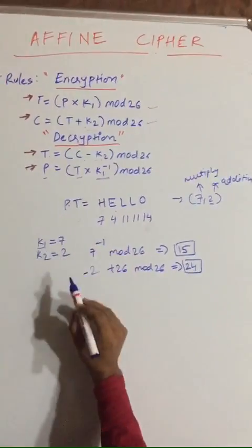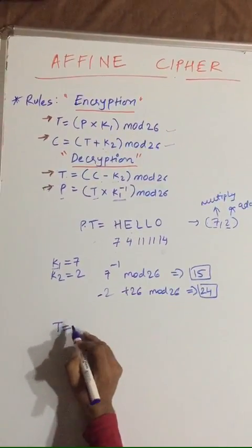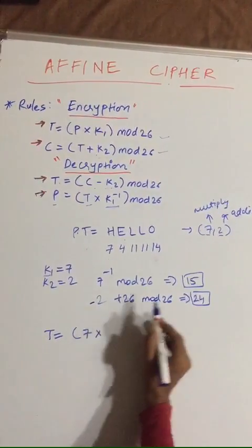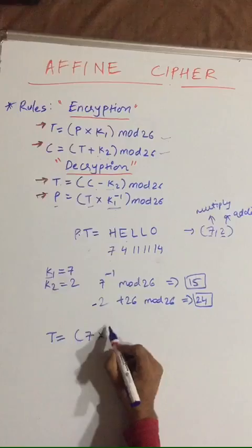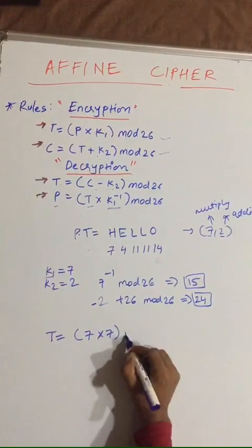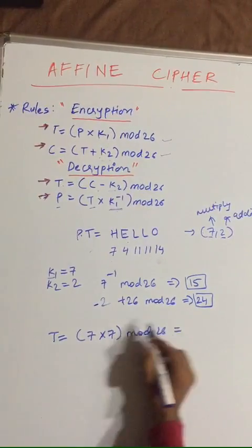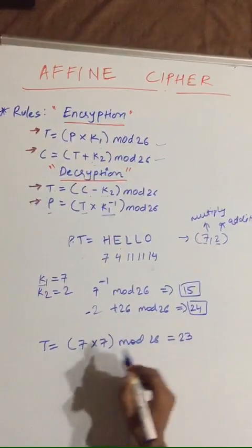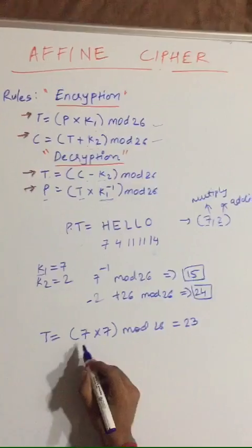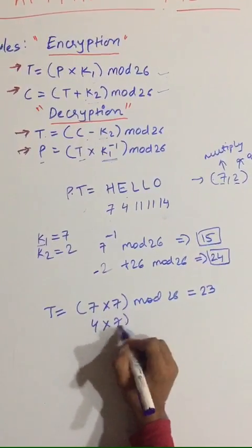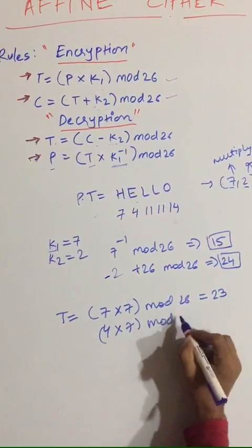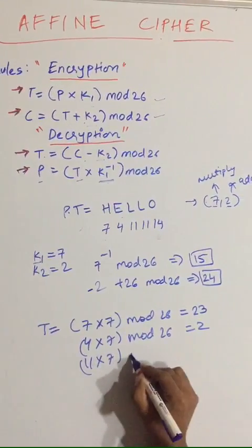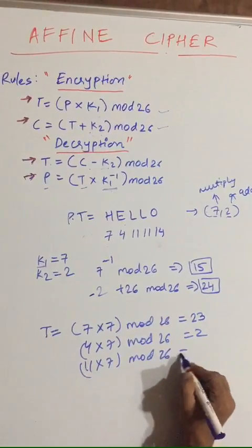Let's do one by one. First, T for H will be equal to plain text 7 times key 7 mod 26, which equals 49 mod 26 equals 23. Now 4 times 7 mod 26 will be equal to 2. 11 times 7 mod 26 will be equal to 25.